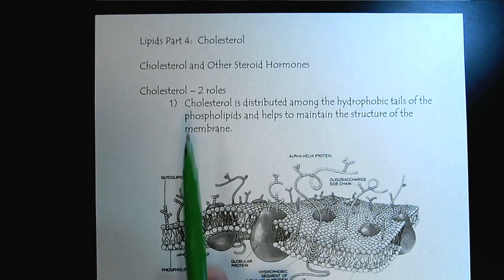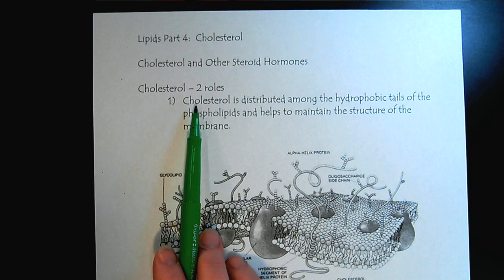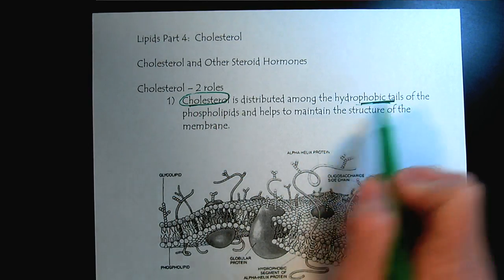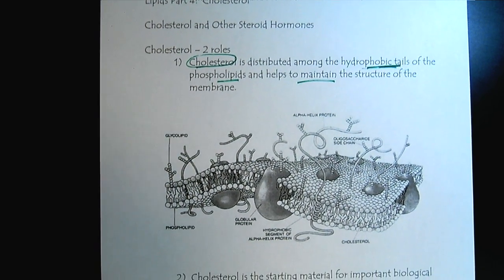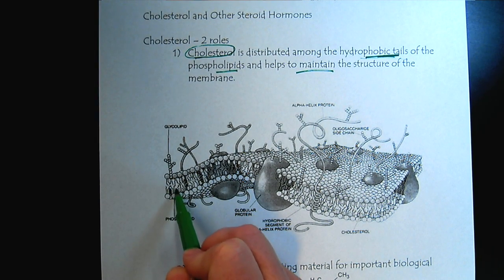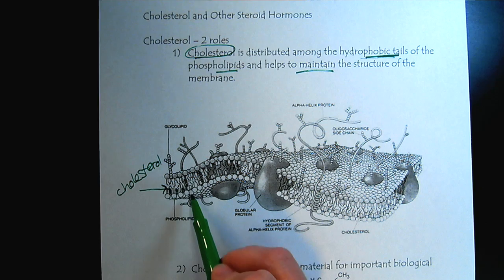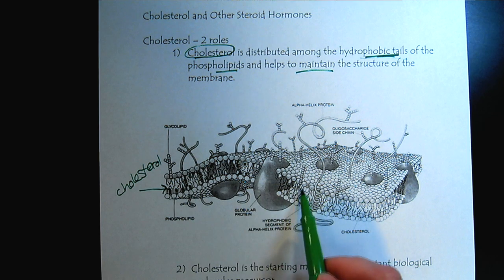Let's look at cholesterol a little more closely. We'll also talk about some other steroid hormones. Cholesterol is distributed among those hydrophobic tails of the phospholipids to help maintain the structure of the membrane. These cell membranes are very busy, so it's hard to find a good schematic, but if we look here, these little circles are representing cholesterol. We can see that they're distributed all over the inside of the cell membrane, giving it rigidity and structure.